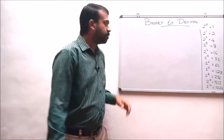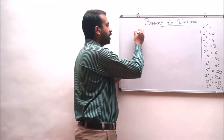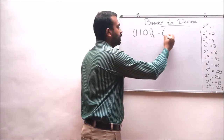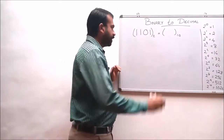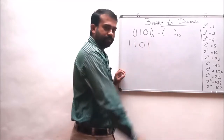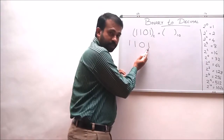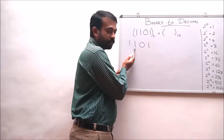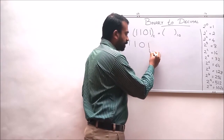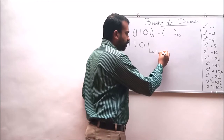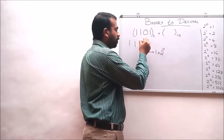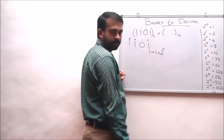Now consider another example: convert 1101 to the base 2 into its decimal equivalent. Consider the binary number 1101. The digit positions are: 0th position for the rightmost digit, then 1st, 2nd, and 3rd digit positions moving left.